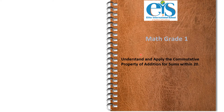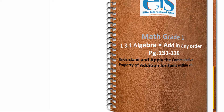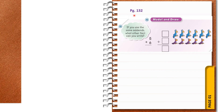Hello Grade 1, welcome back to another session of math lesson. Today we will start with Lesson 3.1: Algebra - Add in Any Order. The objective of this lesson is to understand and apply the commutative property of addition for sums within 20. Take page number 131 of your Go Math practice book and let's start solving the questions.